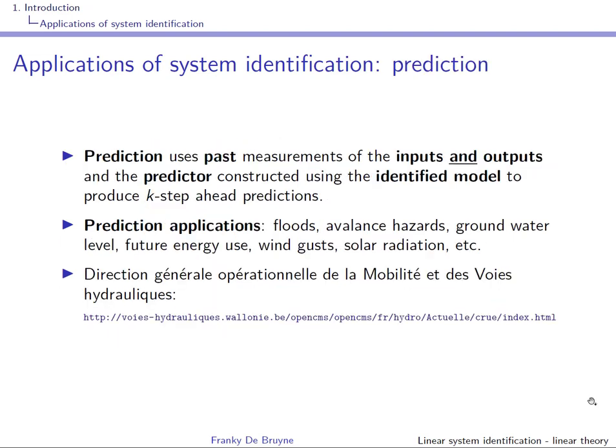One very important application of system identification is prediction. Prediction uses past measurements of both inputs and outputs, and the predictor is constructed using the identified model. A k-step-ahead prediction is produced — if k equals one, you have a prediction one step, corresponding to one sampling period, ahead in the future.